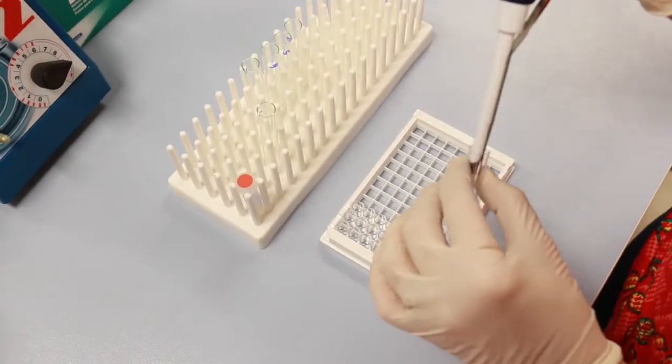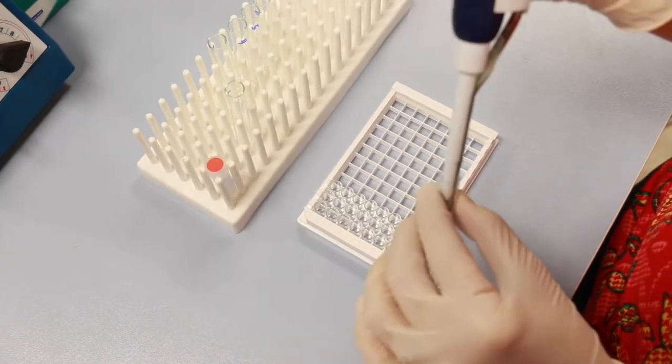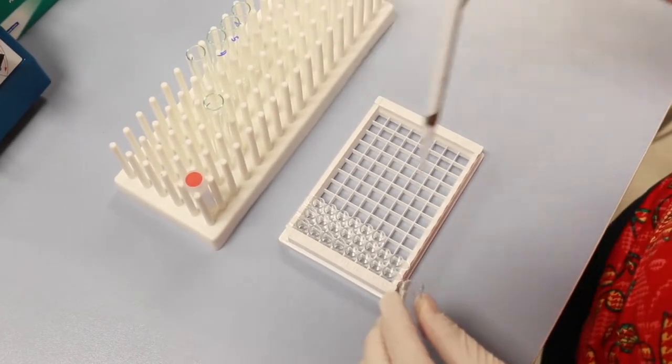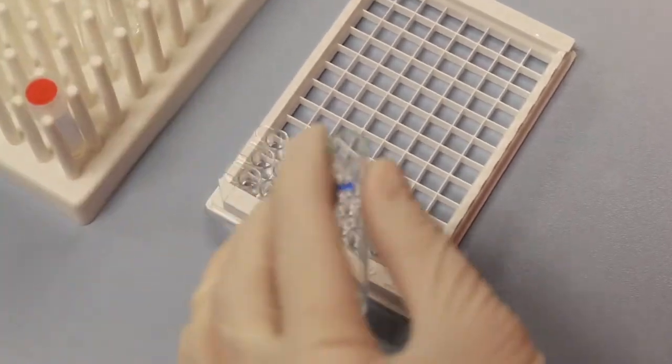When setting up your immunoassay, pipette down the columns of wells to make the most use of the coated plate.